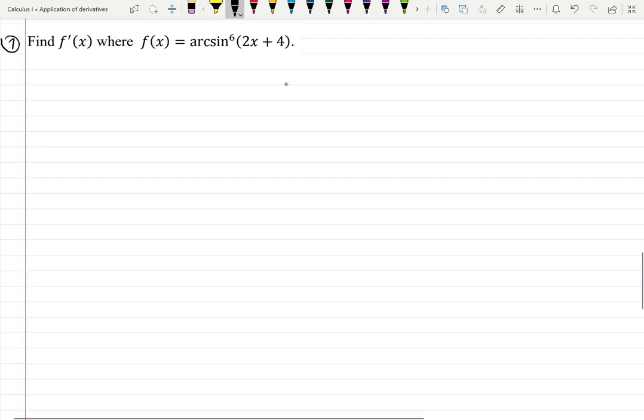Arcsine to the 6th of 2x plus 4. What do you see first? Basically, I see here chain rule twice. The most inside function is polynomial 2x plus 4. This function is inside of arcsine, which is inverse trig function. But arcsine is raised to the 6th power. If you don't see it clearly this way, then you write arcsine of 2x plus 4 and everything raised to the 6th power. Now you can see that the 6th power actually is the last step. So that's what we're going to be differentiating first.